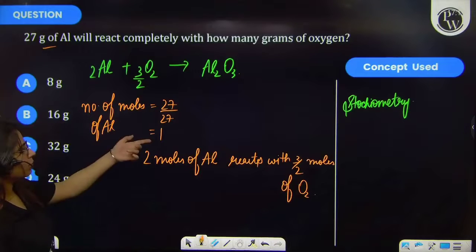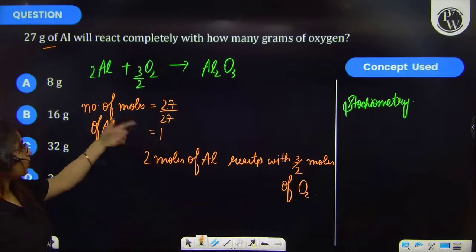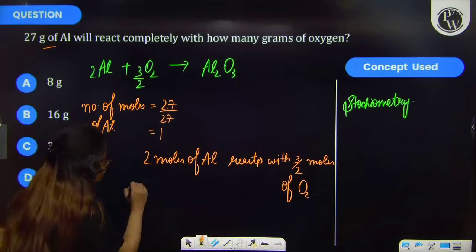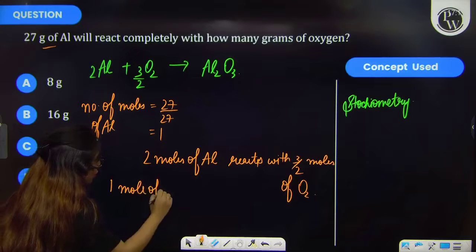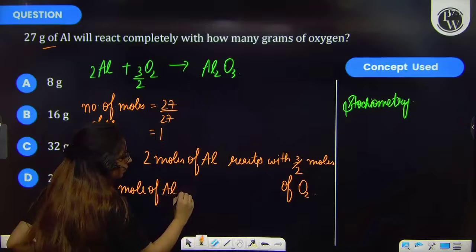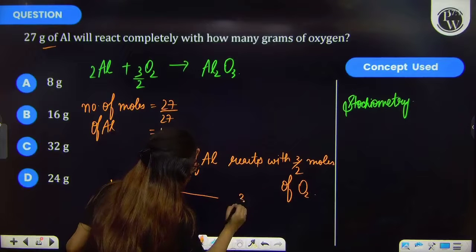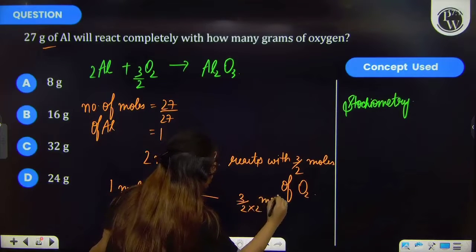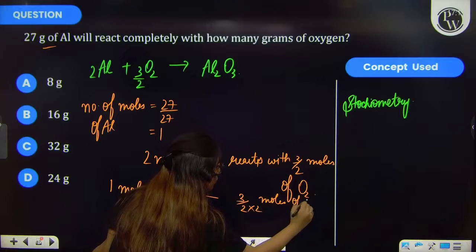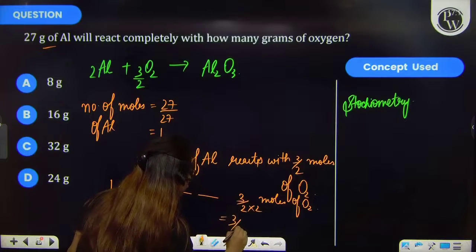If I talk about 1 mole, because we have to find number of moles of oxygen, so 1 mole of aluminium will react with 3/2 into 1/2 moles of oxygen. So this will become 3/4.